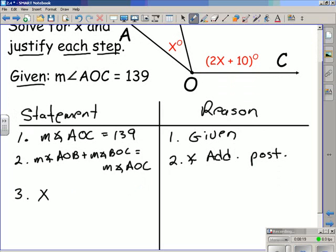Here I replace the measure of angle AOB with x. I replace the measure of angle BOC with 2x plus 10. And I replace the measure of angle AOC with 139. And I'm allowed to do that because of the substitution property of equality.